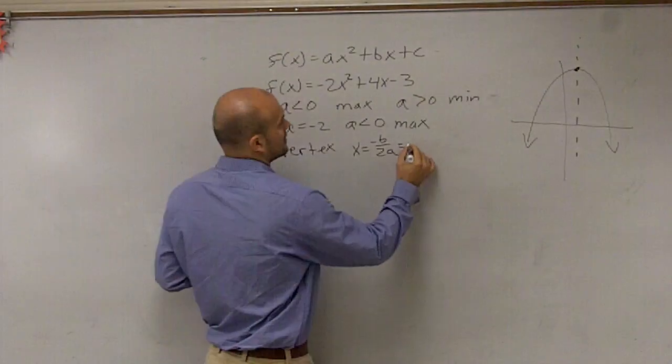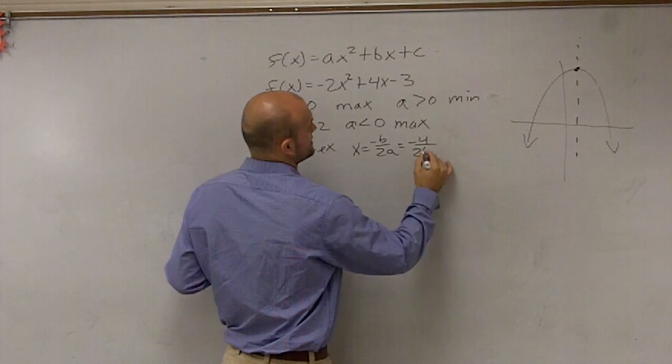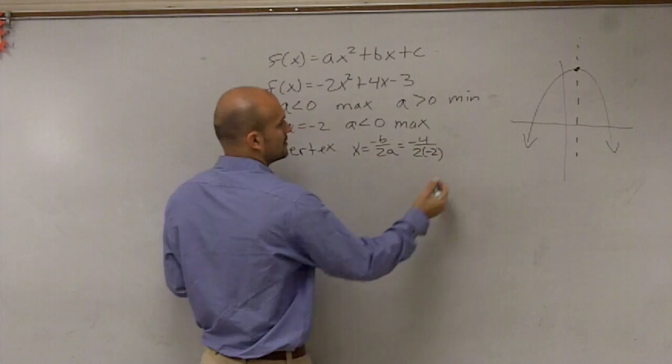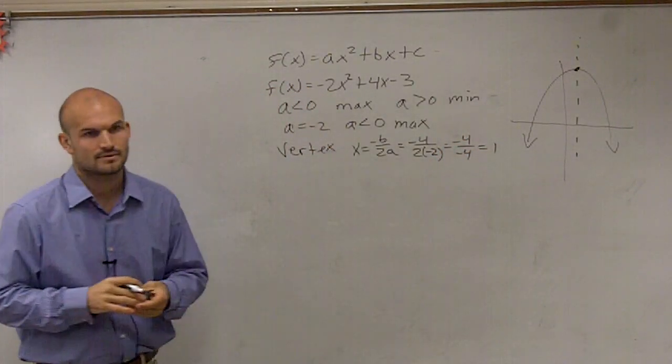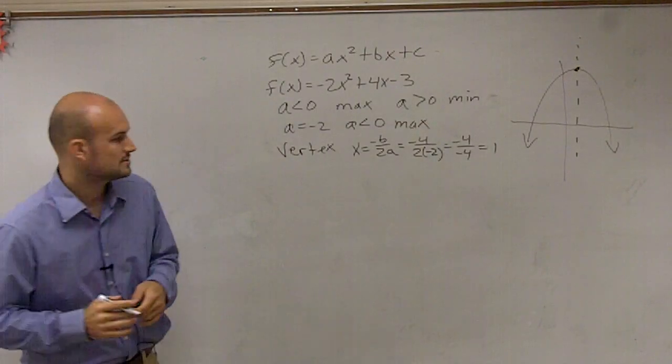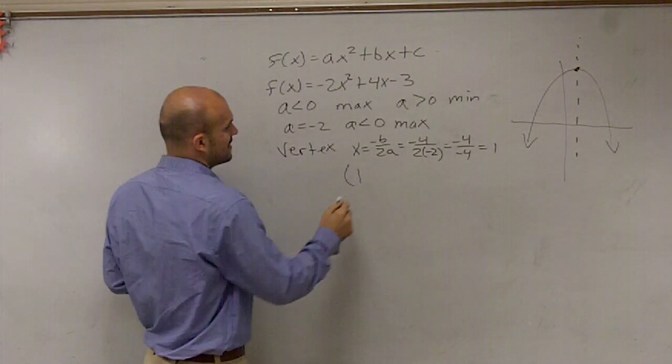So I look at my b, and I'm going to have negative 4 divided by 2 times negative 2. So I get negative 4 divided by negative 4, which equals 1. So therefore, I have my vertex. I have the coordinate 1.